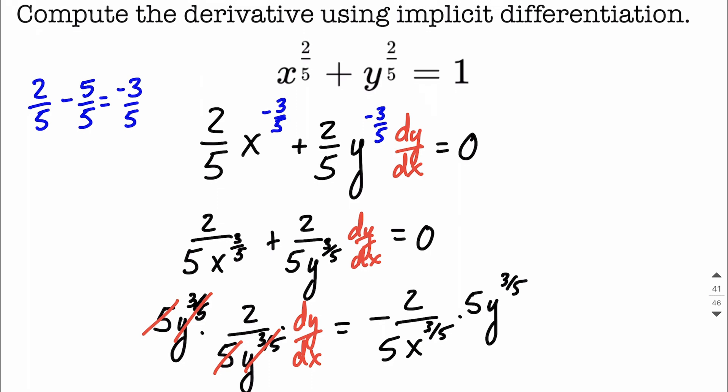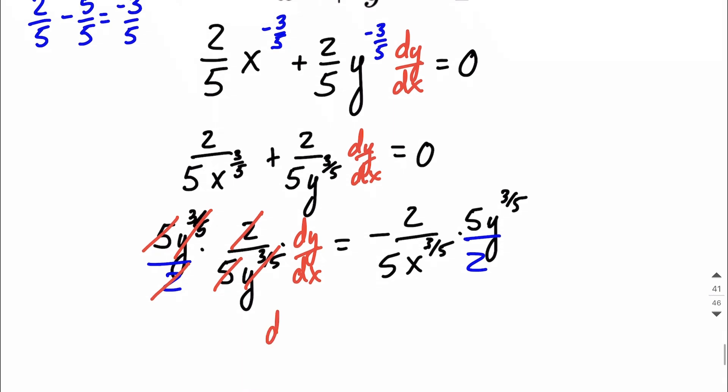And then we also still need to get rid of that 2. Let's go ahead and divide by 2, and divide by 2 on this side. The dividing by 2 will cancel out this. 2 over 2 is going to make a 1. That's going to isolate the dy dx on the left-hand side.